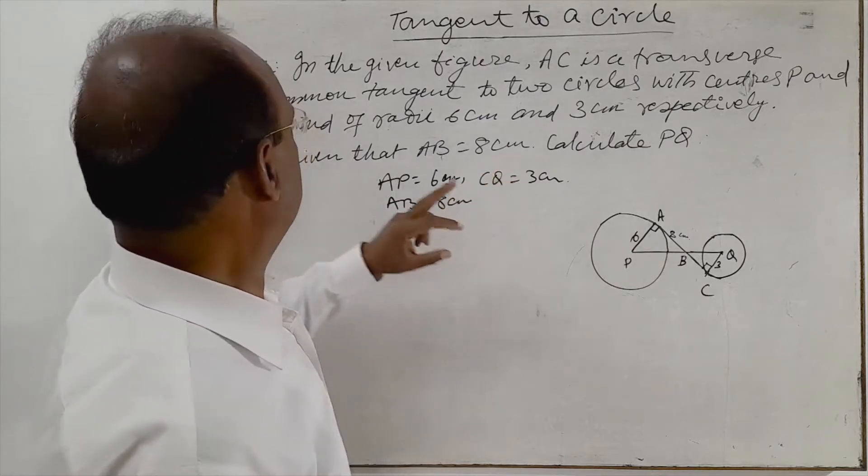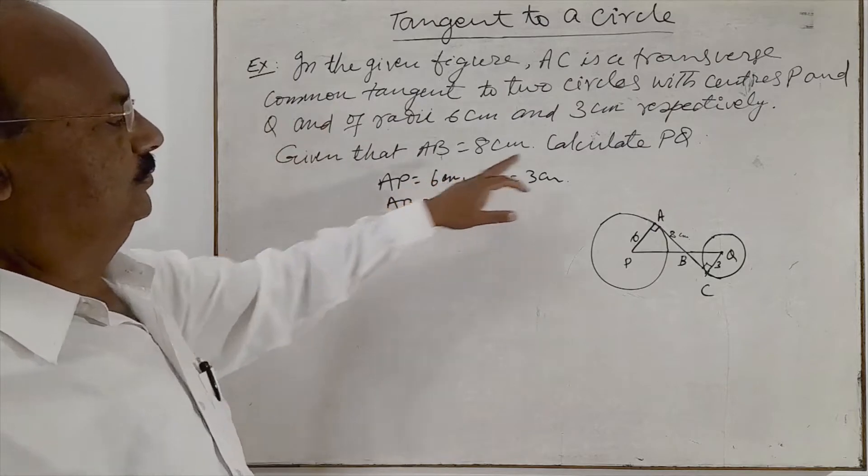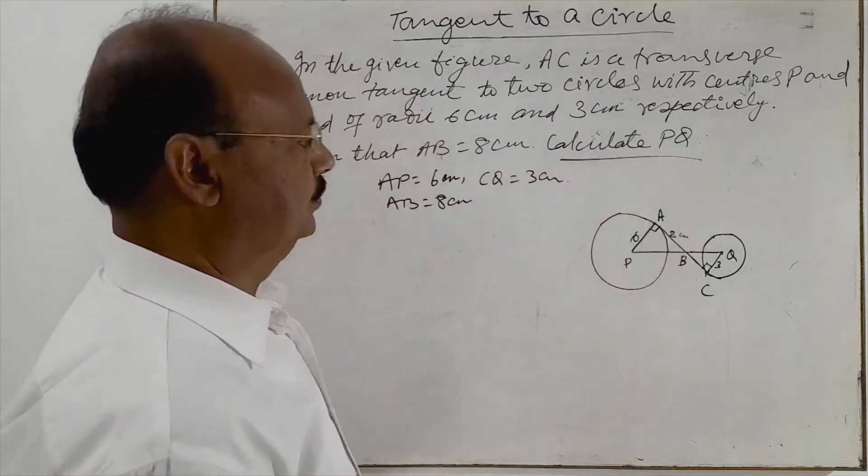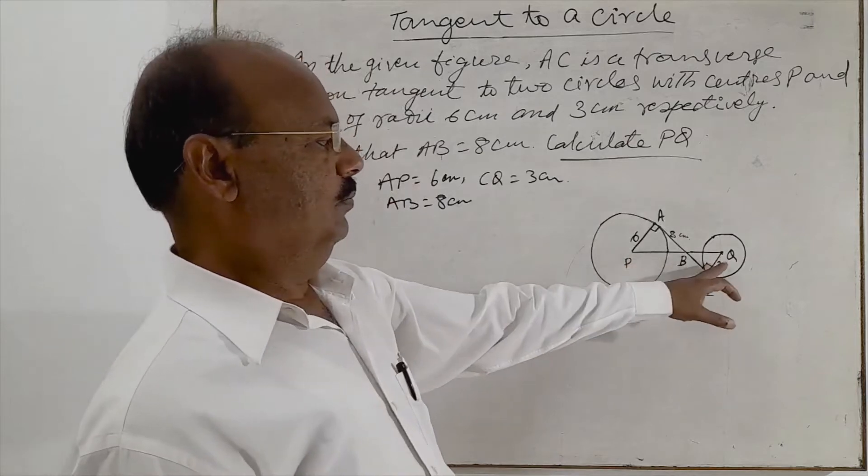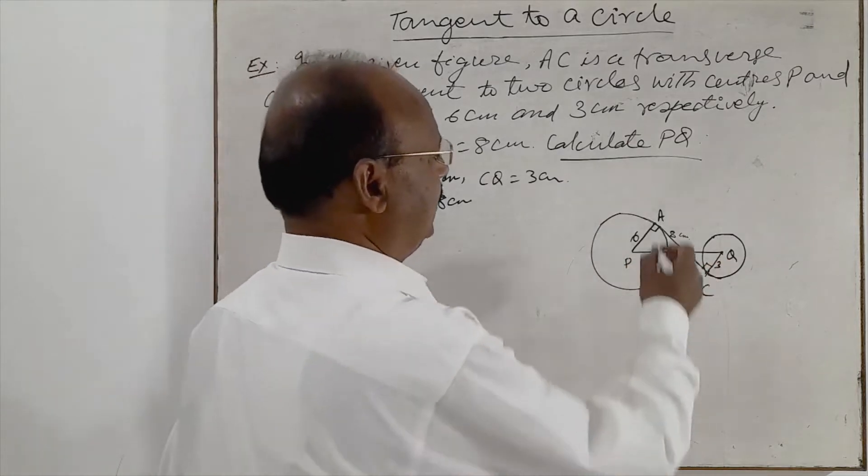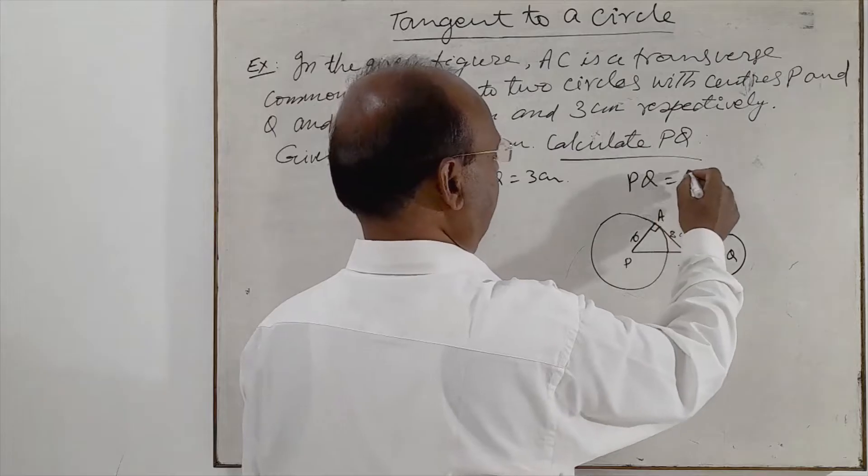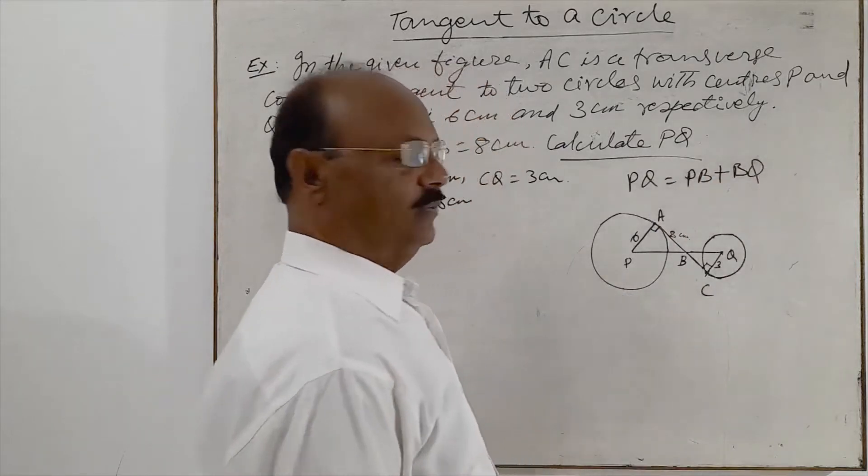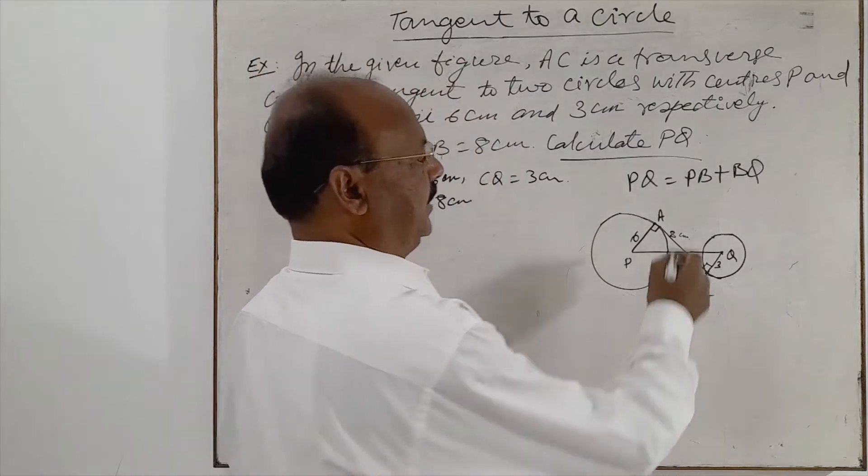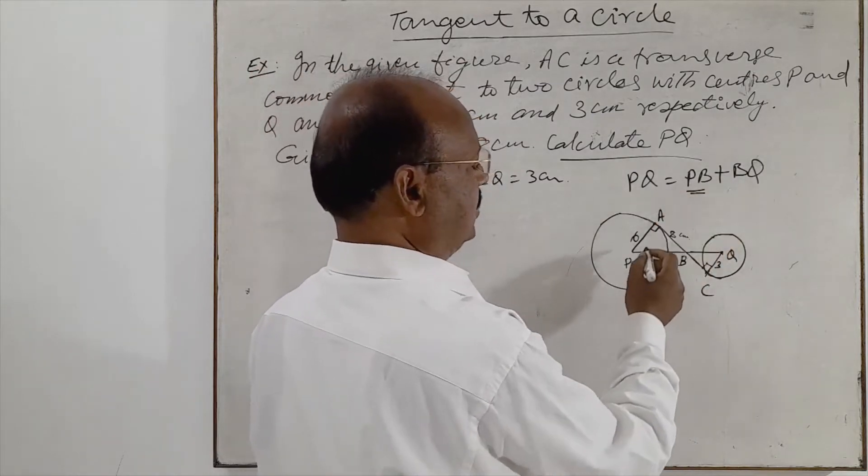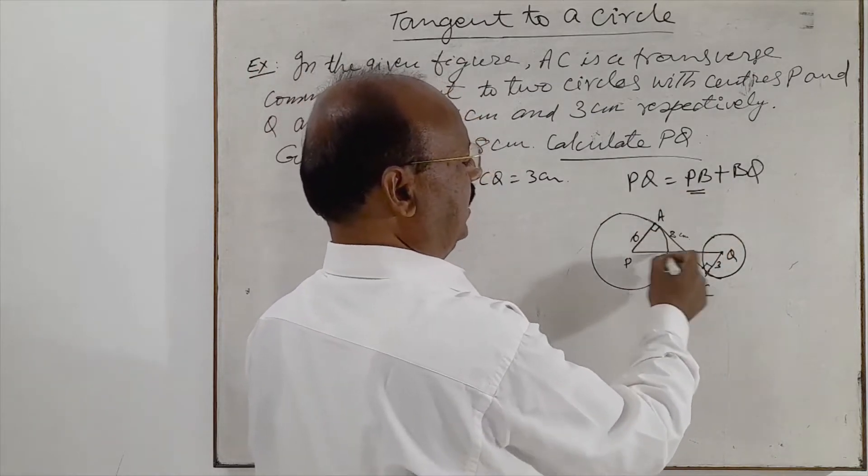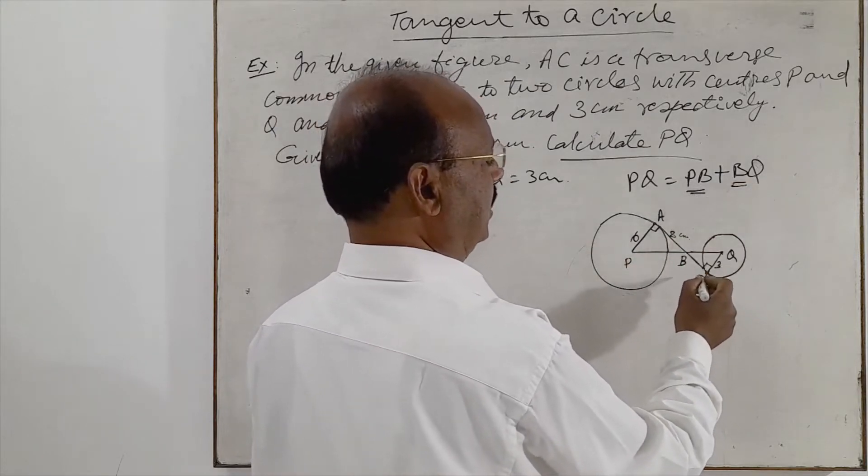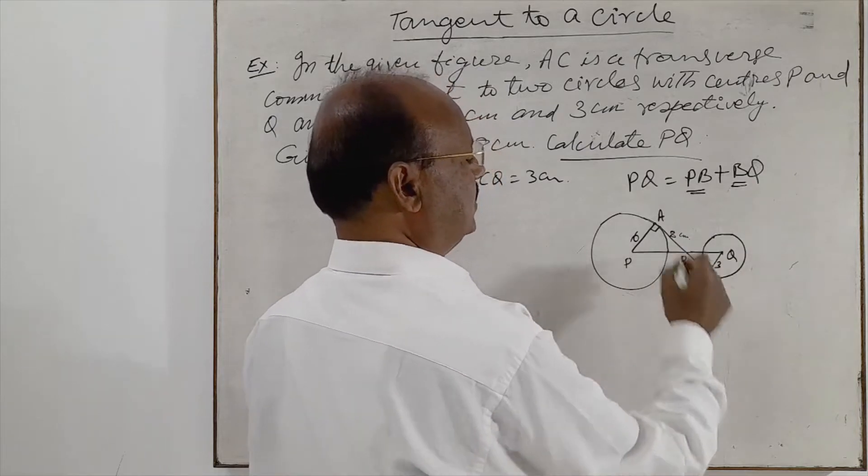We have to calculate PQ. So PQ will be equal to PB plus BQ. First of all, we will try to find out PB from this triangle PAB, and again we will try to find out BQ from this triangle BQC.